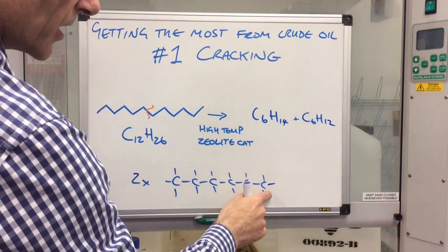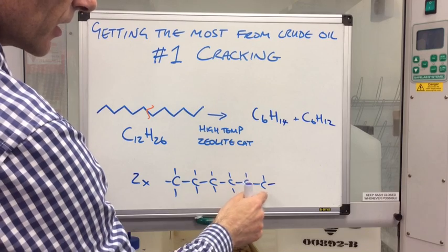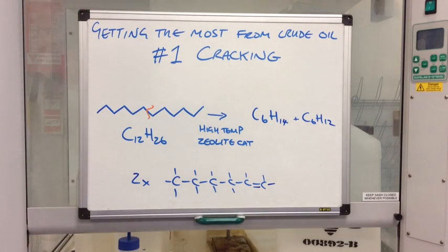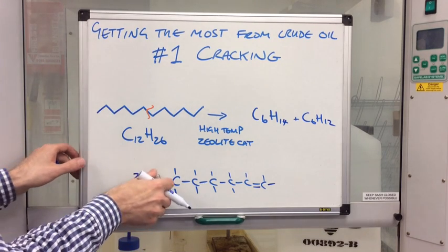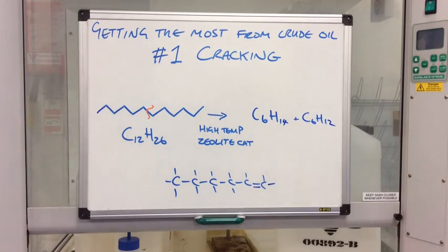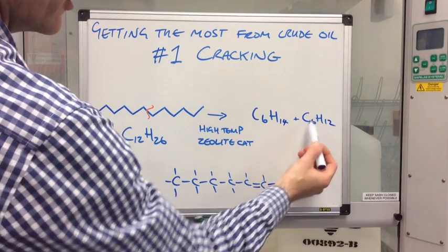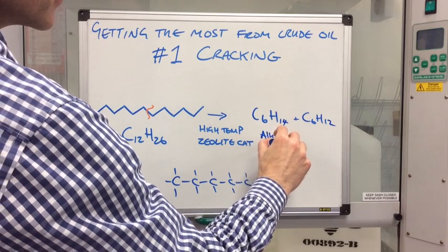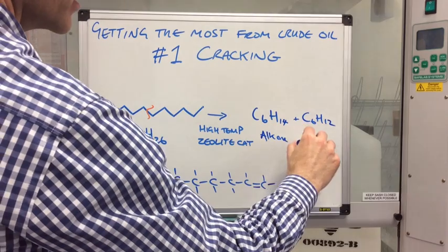So that would be, let's just knock these off. So you can see we're going to end up with those. I'll just lose this two now. So hopefully you can see from these molecular formulae that what we've made is an alkane and an alkene.